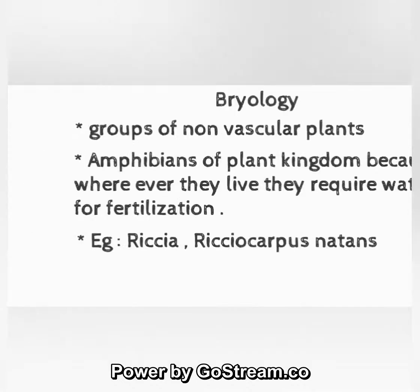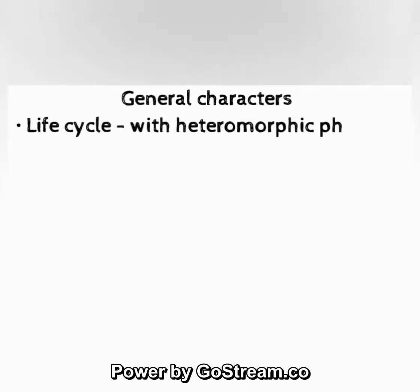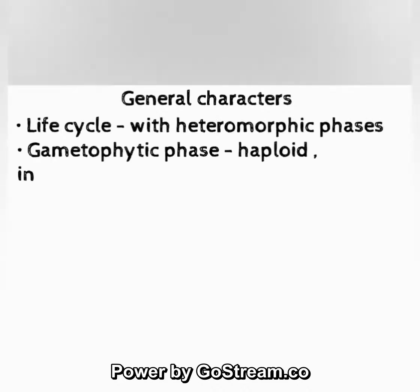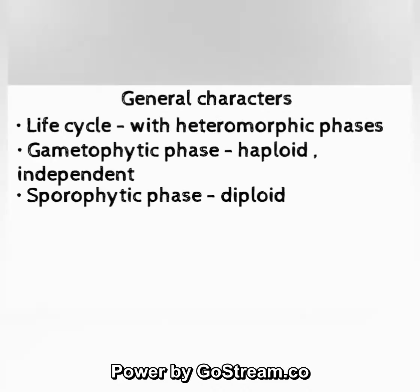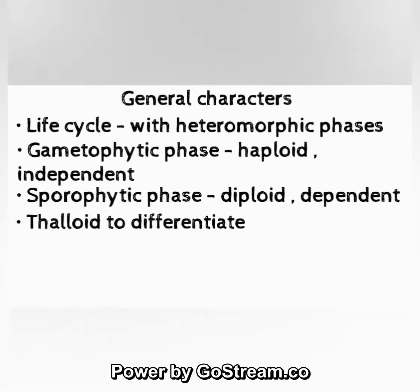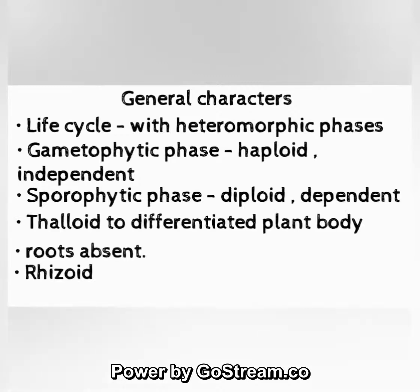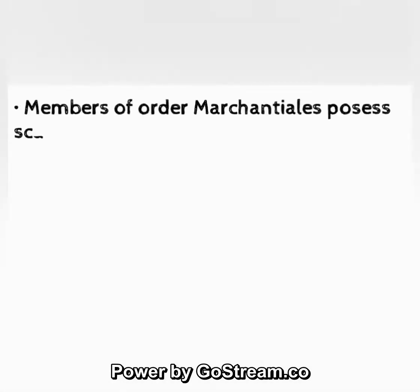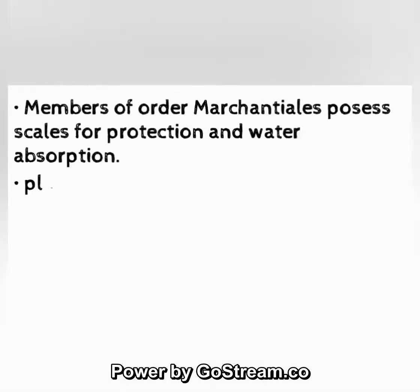General characters: life cycle with heteromorphic phases. Gametophytic phase is haploid and independent; sporophytic phase is diploid and dependent on gametophyte. The plant body is differentiated; roots are absent but rhizoids, either unicellular or multicellular, are present. Members of order Marchantiales possess scales for protection and water absorption.